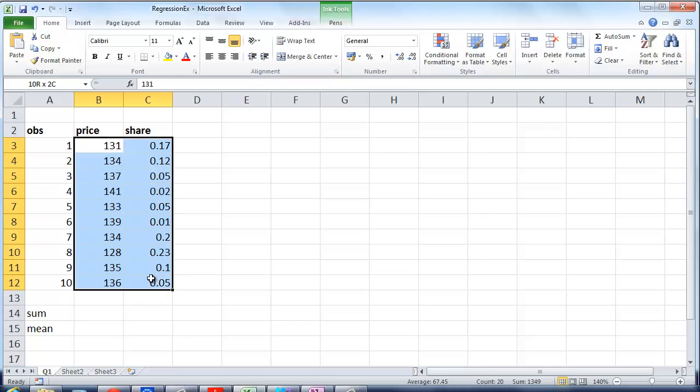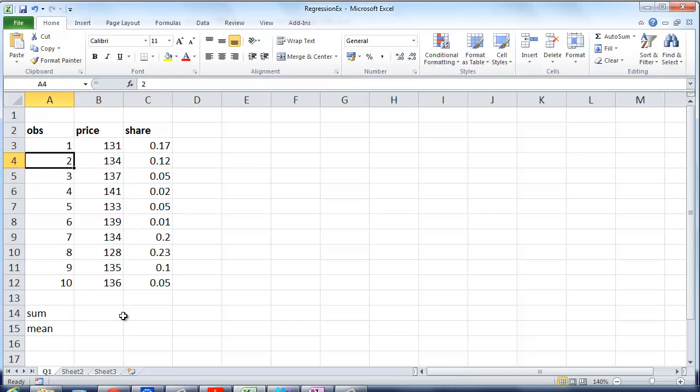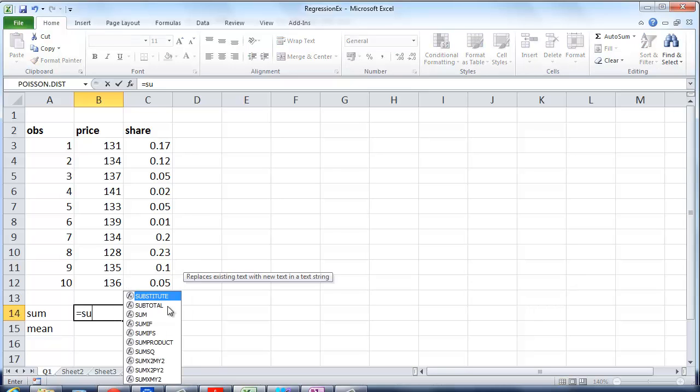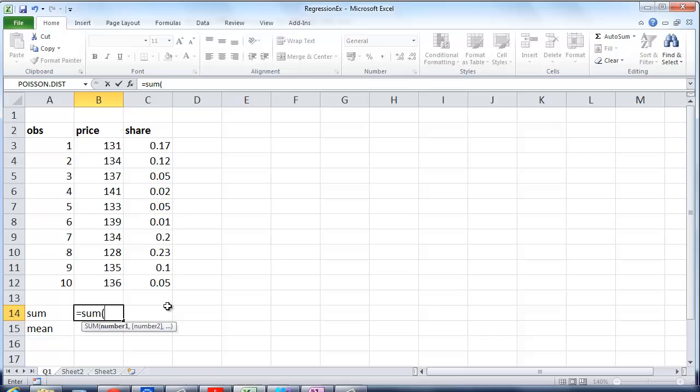So here are all the data. If I want the sample mean, first of the price, the first thing I do is I calculate the sum. And then I divide this result by the number of observations. 134.8.